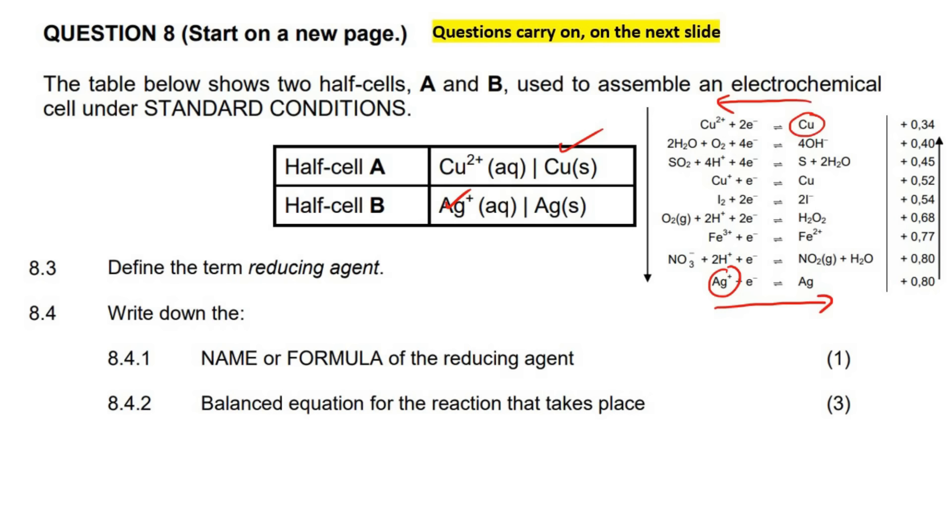So we should know from our OIL RIG acronym that this is an oxidation reaction when it goes in that direction. So this is oxidation. And then this is a reduction reaction when it goes in that direction. So it says name or formula of the reducing agent. Now, in the previous question, we said that a reducing agent is the substance that is oxidized. So we come up to the oxidation reaction and we see which substance is oxidized.